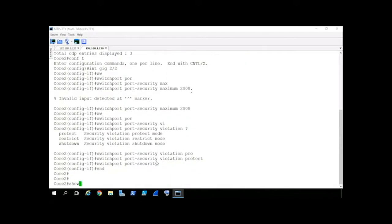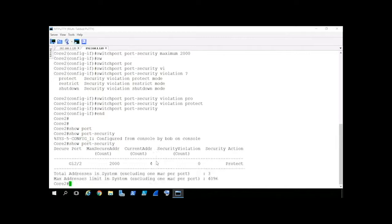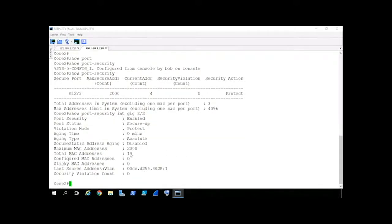Then we'll verify our work. Show port-security. Great. Gig 2/2, 2,000. Wow, it has four MAC addresses at the moment in the lab. Great. Security action is protect. And let's also do that same command again, but we'll say interface gig 2/2, press enter. And the number of MAC addresses is growing as it's dynamically seeing more and more.